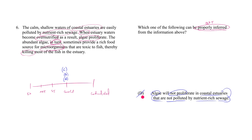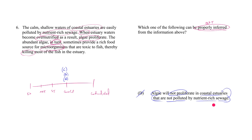This answer choice tries to trick you into assuming that when one cause is revealed, there are no other causes. They reveal one cause of algae proliferation — nutrient-rich sewage pollution of coastal estuaries — but that doesn't preclude other causes. For any given effect, there could be multiple causes. Just because you're told one causal link doesn't mean you get to rule out all other potential causes. So D joins the wrong answer choices: could be true or could be false.